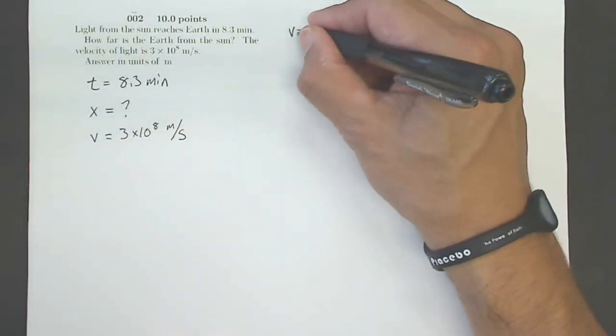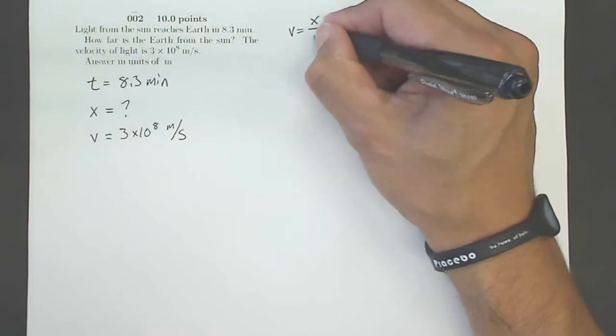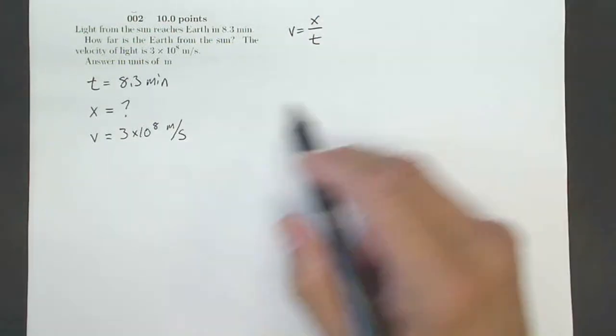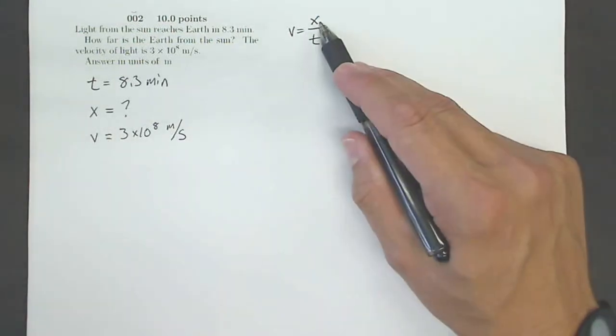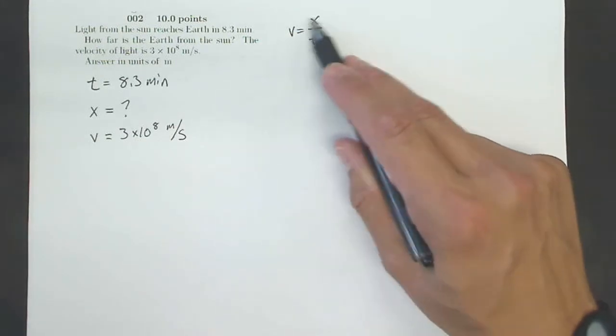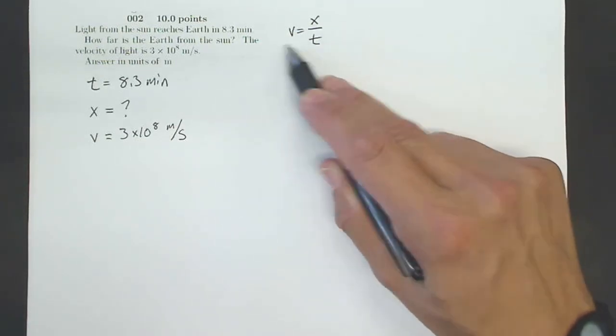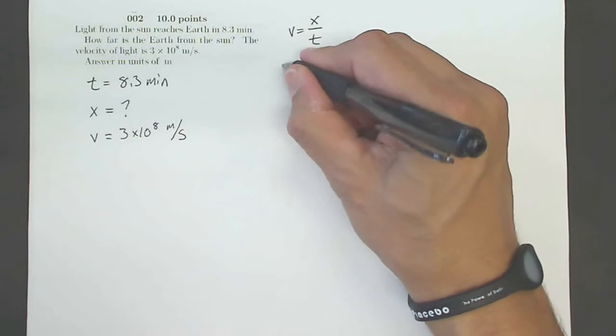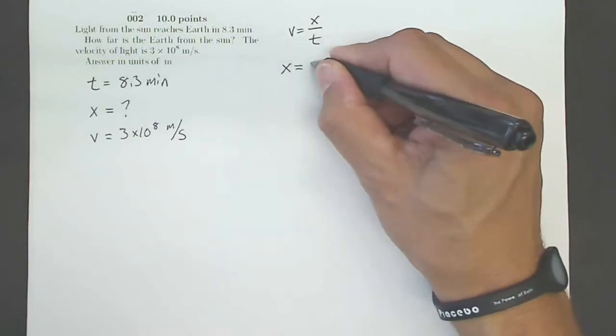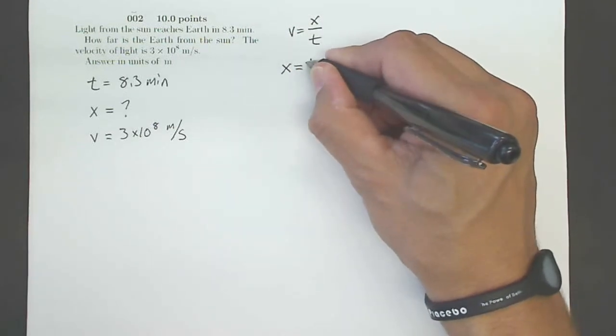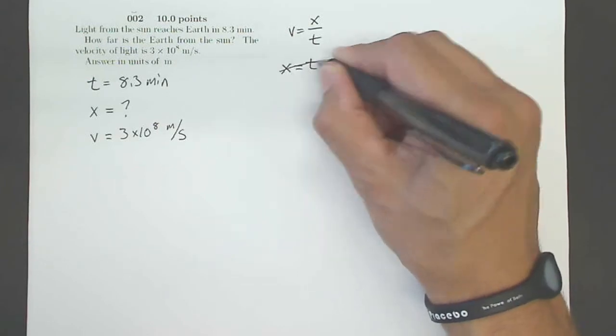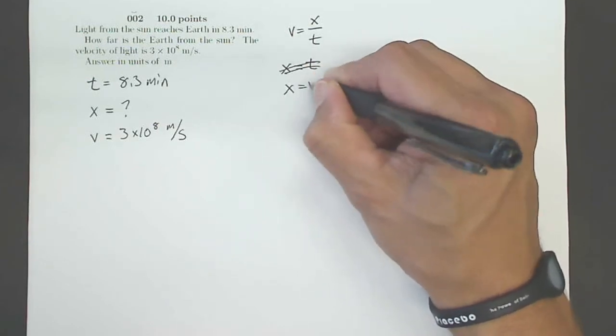I know that my velocity equals my displacement divided by my time. Since I'm looking for my displacement, I'm going to solve for x before I plug any numbers in. So that means I'm going to multiply both sides by t. And what that will rearrange to be is x equals v t.